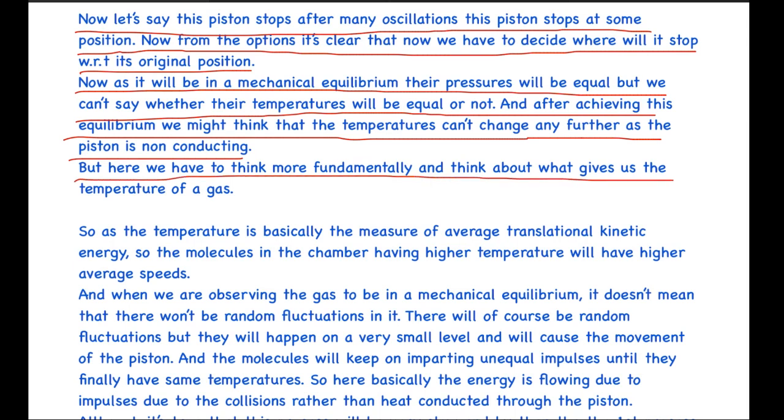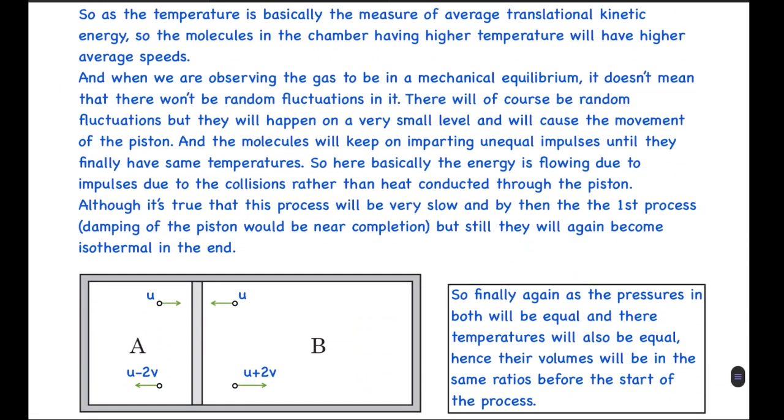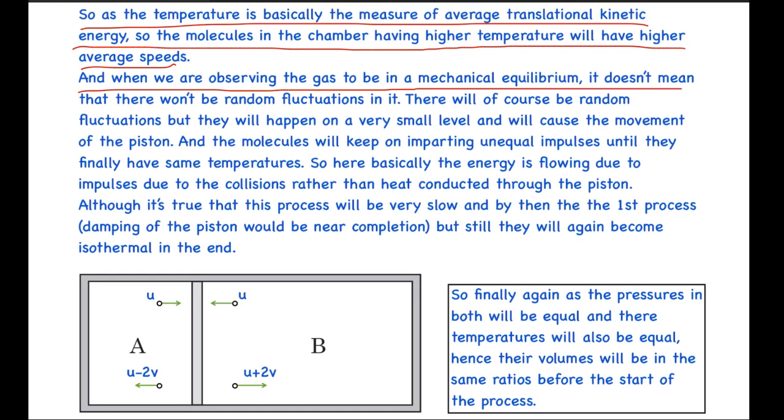Here we have to think more fundamentally and think about what gives us the temperature of gas. We have to consider the small variations which we averaged out in the laws we use that assume it to be in equilibrium. As the temperature is basically the measure of average translational kinetic energy, the molecules in the chamber having higher temperature will have higher average speeds. When we are observing the gas to be in mechanical equilibrium, it doesn't mean that there won't be random fluctuations in it. When we start increasing the size of our sample, the random fluctuations which we assume in statistical thermodynamics kind of average out and we don't observe them at very large systems which we usually face in our general life. But here we have to consider that there will of course be random fluctuations. They will happen at a very small level and will cause the movement of the piston.